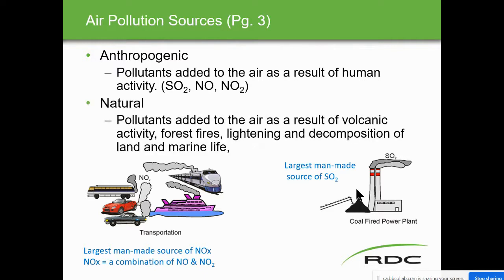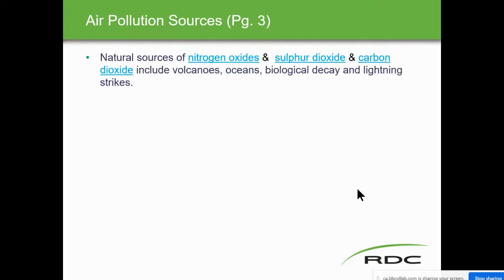Natural pollutants are added to the air as a result of volcanic activity. You've got your forest fires, lightning, and decomposition of land and marine life — and you'd be surprised how much that adds to air pollution. Natural sources of nitrogen oxides, sulfur dioxide, and carbon dioxide include volcanoes, oceans, biological decay, and lightning strikes. That's on page three of your ILM.